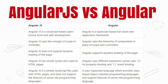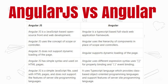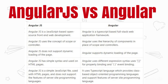AngularJS is the older version of Angular. AngularJS is a JavaScript-based open source front-end development framework — we can download it from Google. Angular, on the other hand, is a TypeScript-based framework which is basically a full-stack web development framework, where you can also develop server-side things using TypeScript.